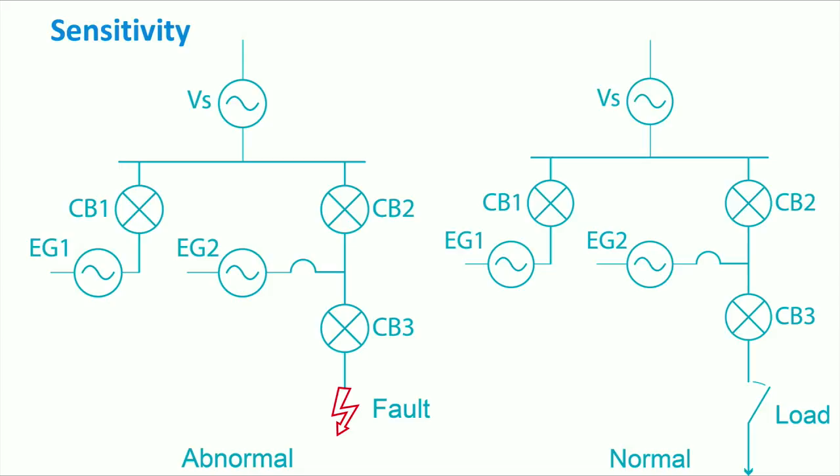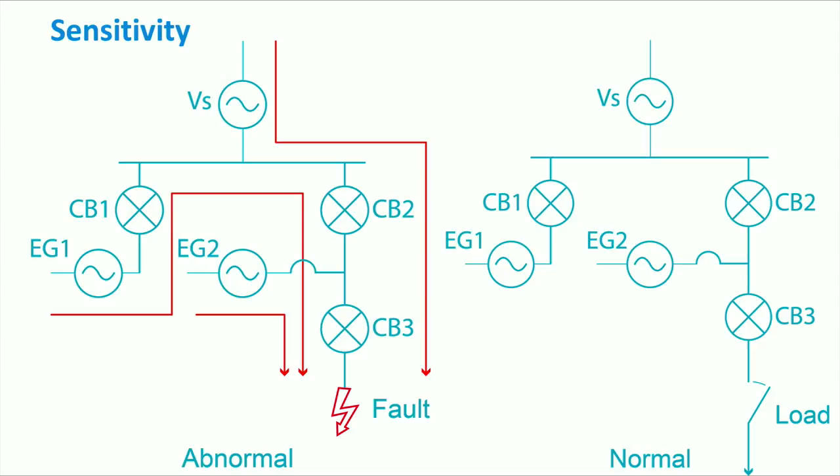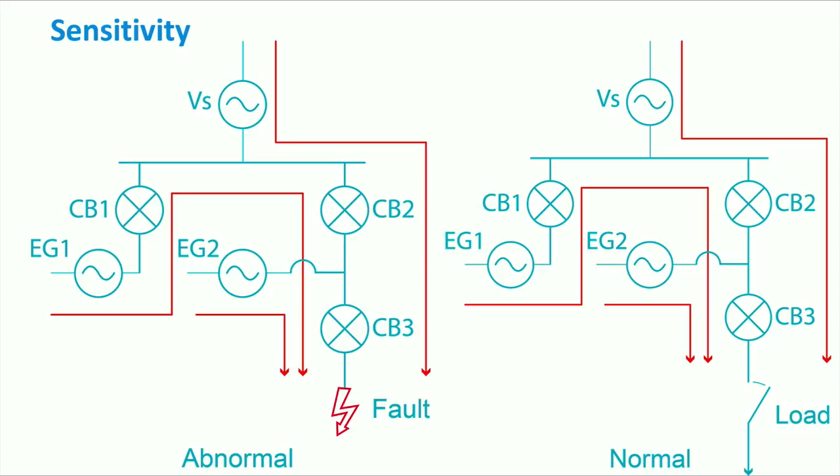When a fault occurs, on the figure on the left, the generators labeled EG in the drawing will start injecting more current in order to clear the fault. Note that also in case of load connection, the level of current increases in all distribution lines. So the protection scheme shall be fine-tuned in such a way that the overcurrent relays only operate during the fault conditions.